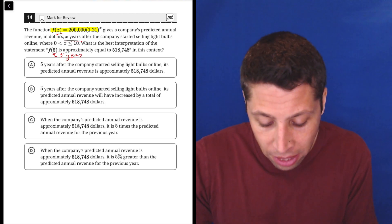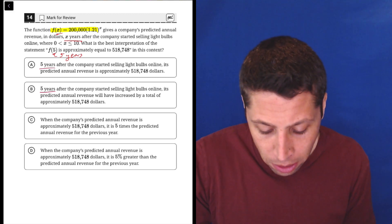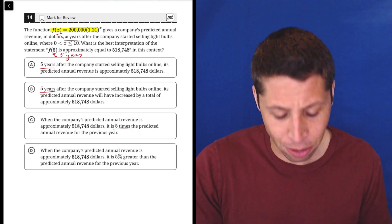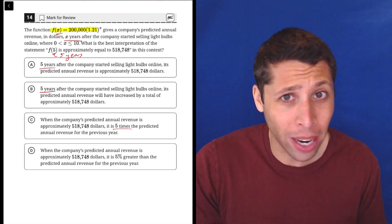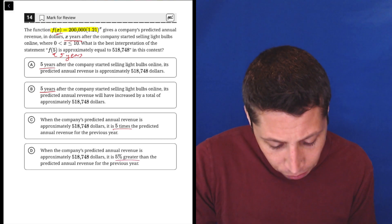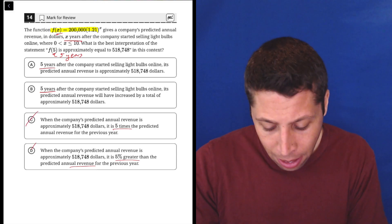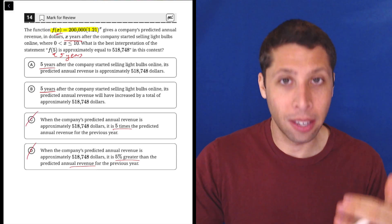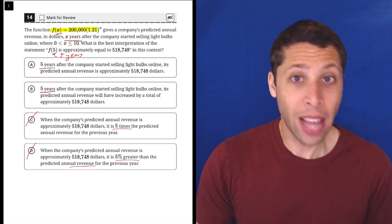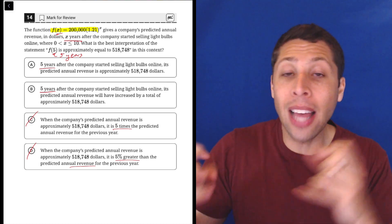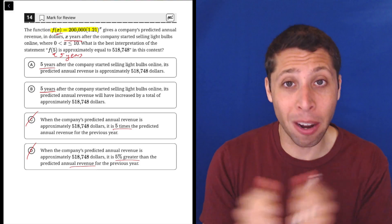Now look at your answer choices. In choice A, we have five years. In choice B, five years. But in C, it's five times the predicted annual revenue. That's not about years. That's no good. And then in D, 5% greater than the annual revenue. Now years kind of slips in at the end. But I would want you to know that the five is a number of years. That's just what they tell us the X coordinate means. So we need that unit to be attached to that number pretty tightly.